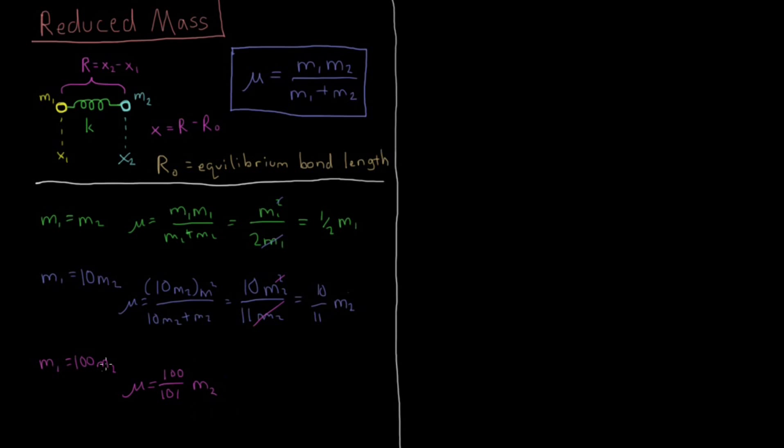So in the limit that the first mass becomes very, very large, much larger than the second mass, then the mass just naturally goes to the second mass. But when they're quite equal, you actually get a situation where the mass you use is actually lighter than both of them. It's one half of the mass that they're both equal to.